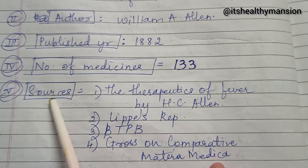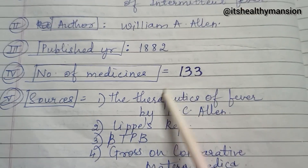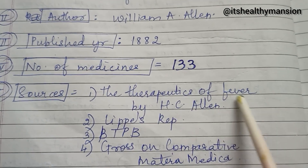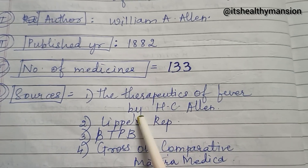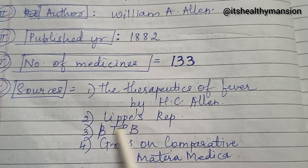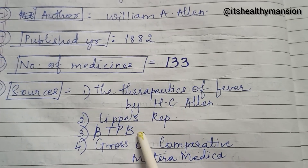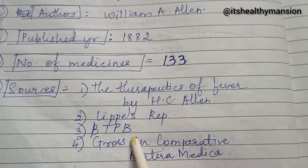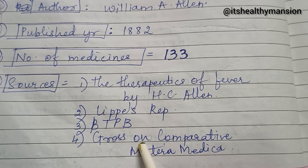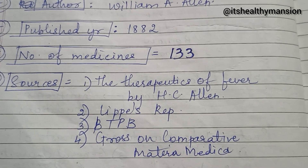The sources of William A. Allen's repertory are: The Therapeutics of Fever by H.C. Allen, Lippe's Repertory, and BTPB — that is Boenninghausen's Therapeutic Pocketbook — along with comparative materia medica.